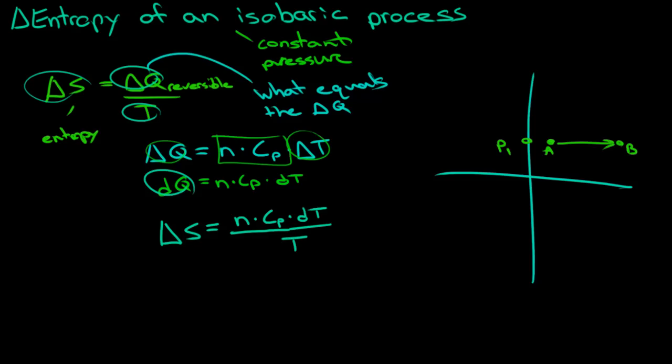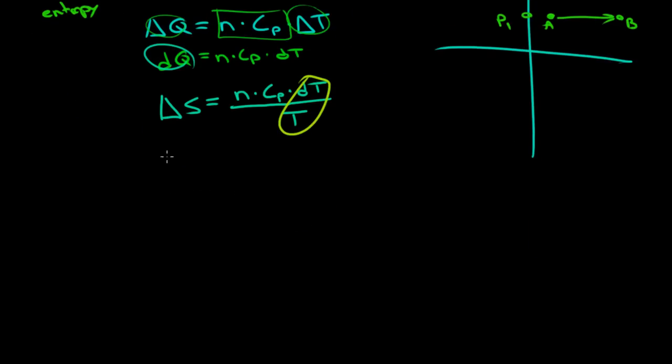And what we can do here is if we integrate the dT over T, we can write delta S equals nCp times the natural log. We take the natural log, then we get natural log of T2 divided by T1. And now this can also be written as natural log of T2 minus the log of T1, and that's the same.